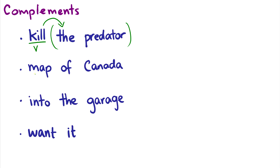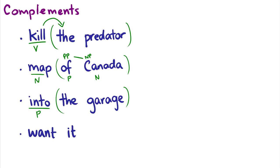Consider something like 'map of Canada'. Map is our noun, and 'of Canada' tells us which map it is. So 'the map of Canada' has a preposition and a noun — this will be a prepositional phrase complement that also takes a noun phrase complement. In 'into the garage', we have a preposition that takes 'the garage' as a complement. Into what? 'Into' is introducing 'the garage' in the sentence. And finally, another verb example with 'want it' — 'want' is a verb, and 'it' would be the object, which is the complement.